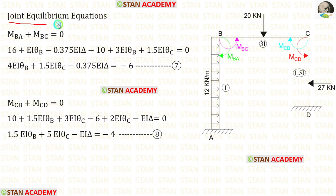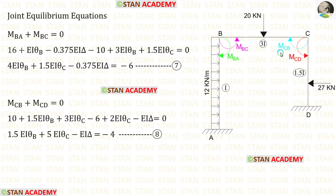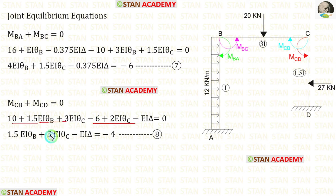Now let us make the joint equilibrium equations. At joint B there are two moments, MBC and MBA. When we add both of them it will be 0. We have already made the slope deflection equations for MBA and MBC; let us apply them, add them, and keep the numerical values on the right side. Let us keep this as equation number 7. At joint C there are two moments, MCB and MCD. When we add both of them it will be 0. Let us apply and add them; let us keep this as equation number 8.